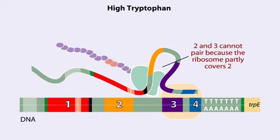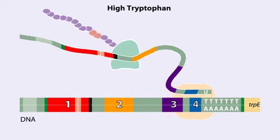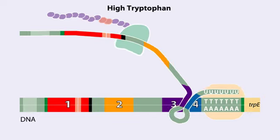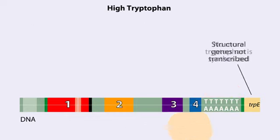Because region 3 is prevented from pairing with region 2, it pairs with region 4 instead to produce the attenuator, which terminates transcription. The structural genes are not transcribed, and therefore no additional tryptophan is synthesized.